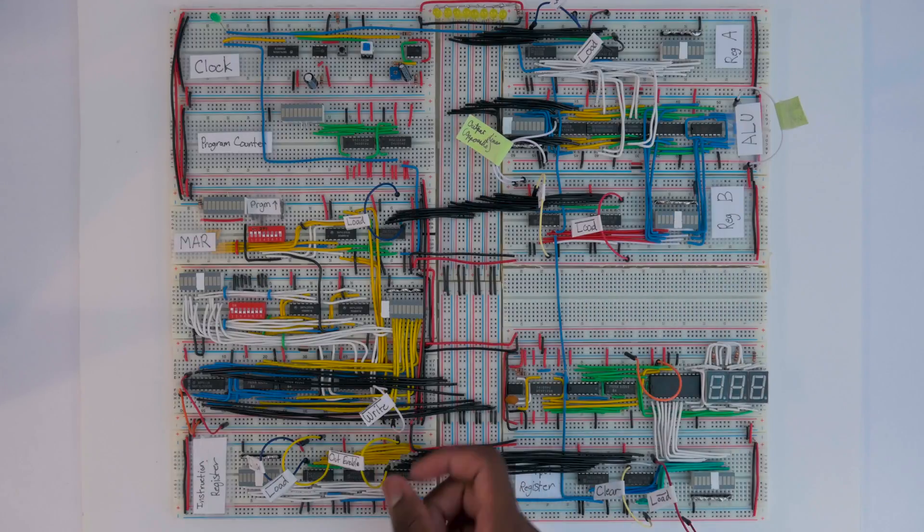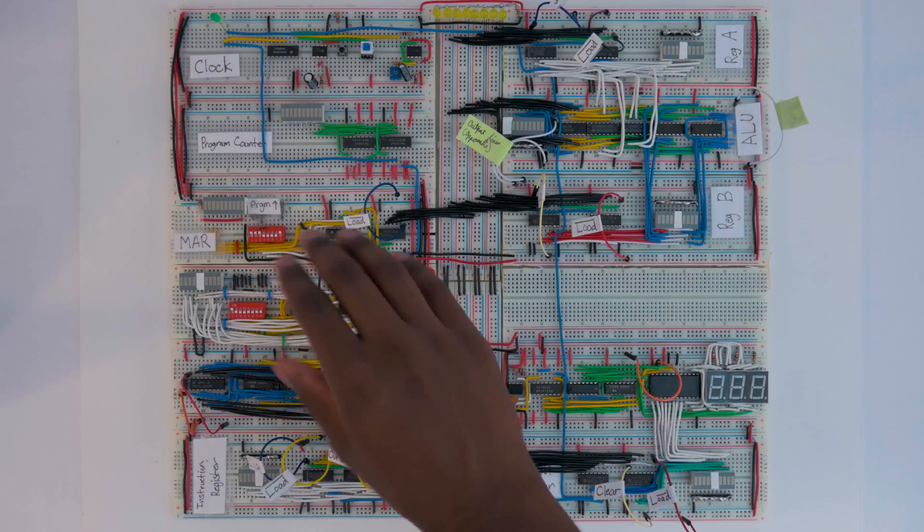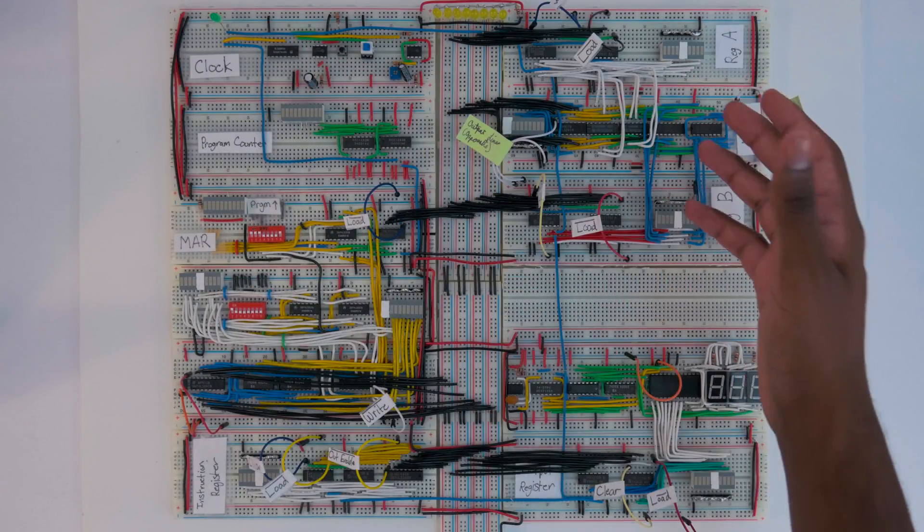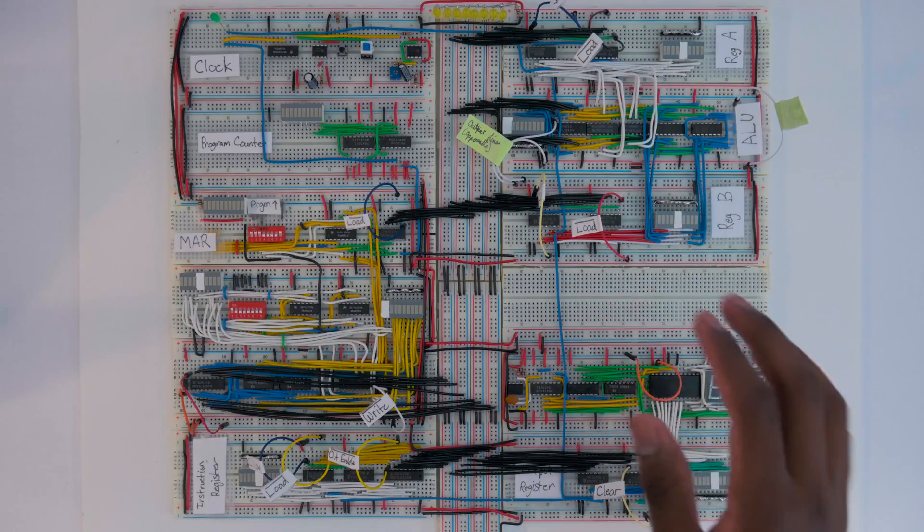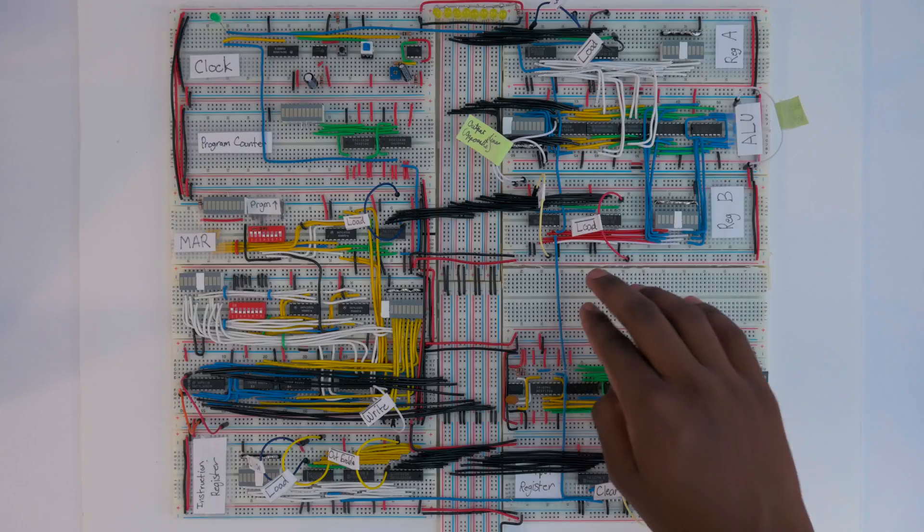It's a lot easier when they're all spread out like this. That was really important for the add example because we got to see how all these individual lines came together to add two numbers and output them, which was really cool. But now that we're done with that, we can move on and build the controller.